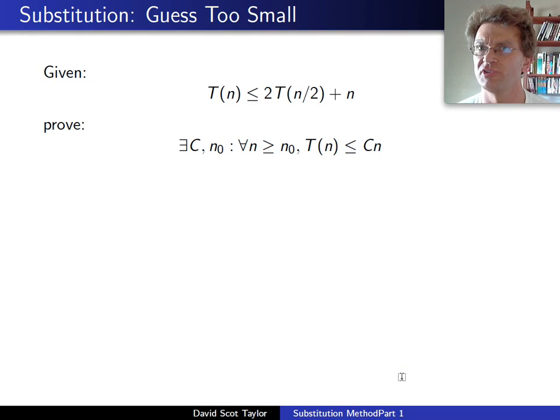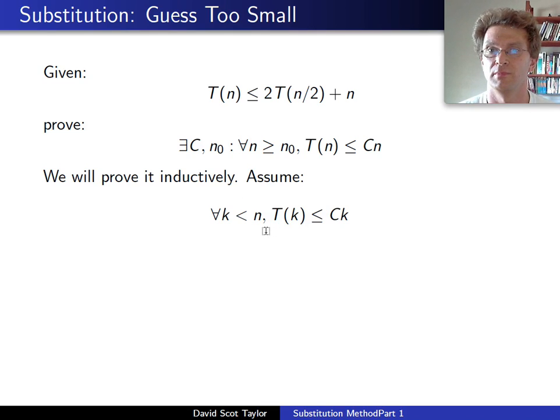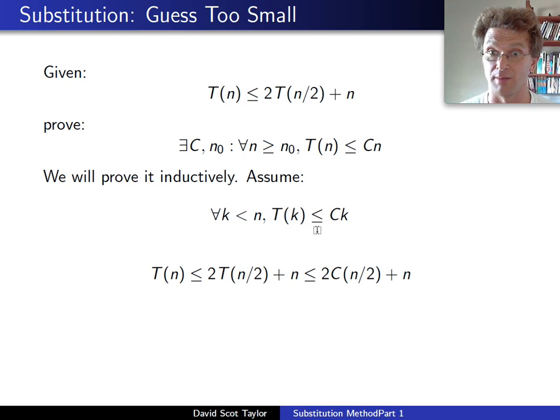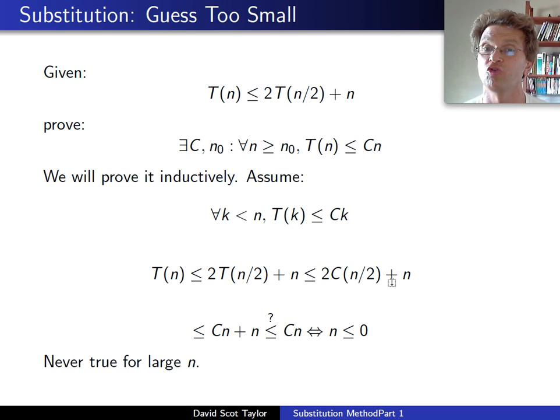Now, what happens if we guess too small? I imagine that I'm given this recurrence relation. I go, I don't know what T(n) is. Maybe it's linear. Maybe I can prove T(n) is big O of n. Great. Let's see if I can prove that. Inductively, assume that for smaller values of n, for k less than n, T(k) ≤ Ck. Take the thing that I'm given, plug in my inductive step, do my algebra, and I'm left with something which simply is not true. Cn + n is not less than or equal to Cn. The only way that would be true is if n was less than or equal to zero. This is never true for n positive.